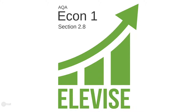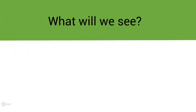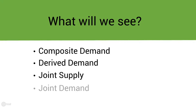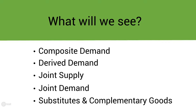Hi and welcome to section 2.8 for Econ 1 on the AQA exam board. Today we're going to be looking at the interconnectiveness of markets and we'll be looking at composite demand, derived demand, joint supply, joint demand, and substitutes and complementary goods.